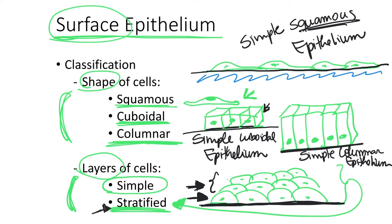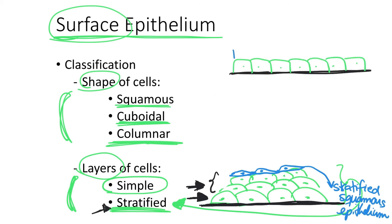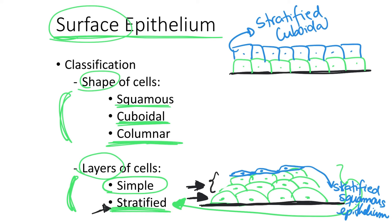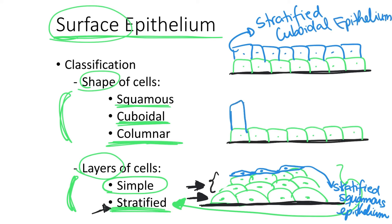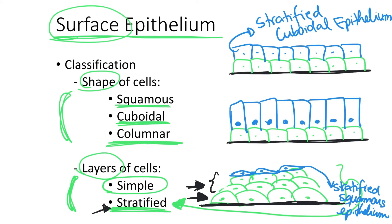What gives us the name of the stratified epithelium is specifically the shape of the cells on the top layer. So if the top layer is composed of flat cells, the epithelium is named stratified squamous epithelium. If the top layer has a cuboidal shape, it is named stratified cuboidal epithelium. And if the top layer is composed of tall columnar cells, it is named stratified columnar epithelium.